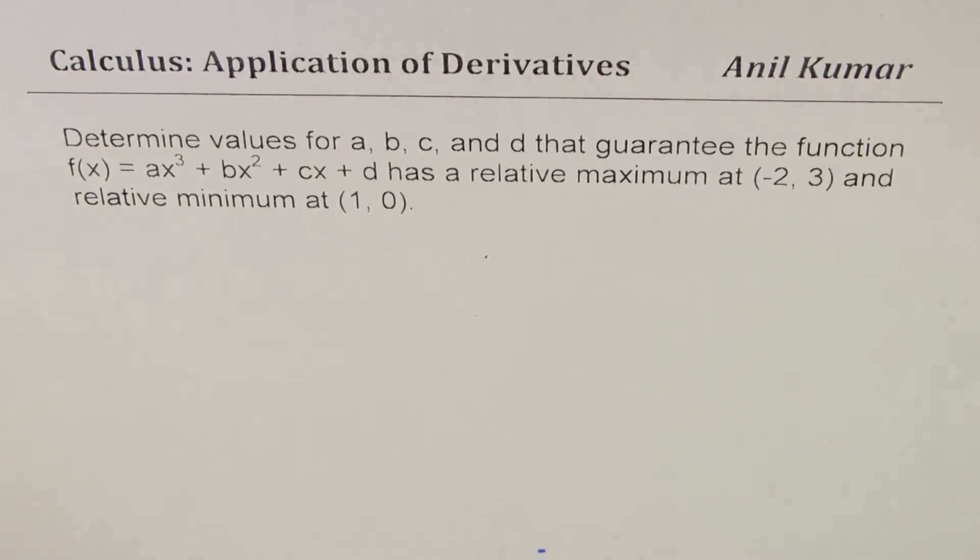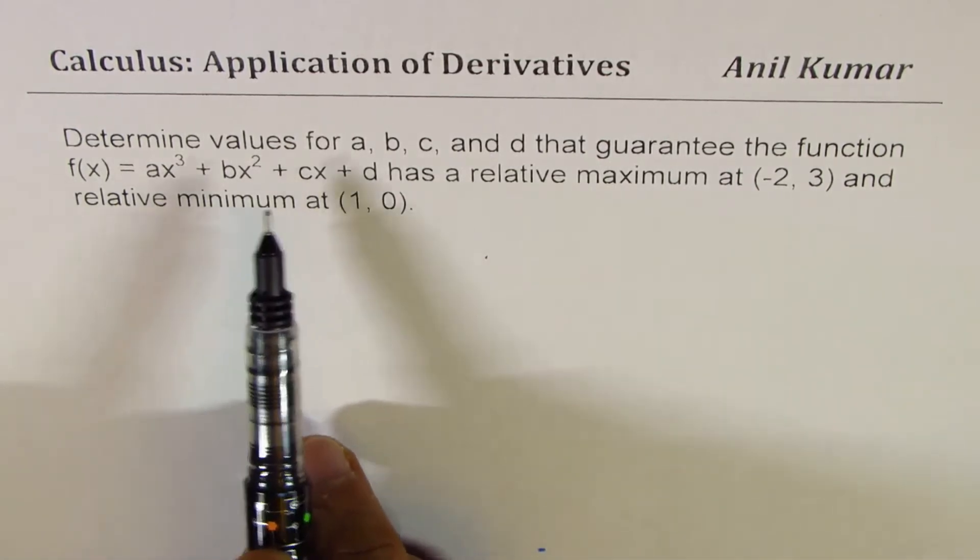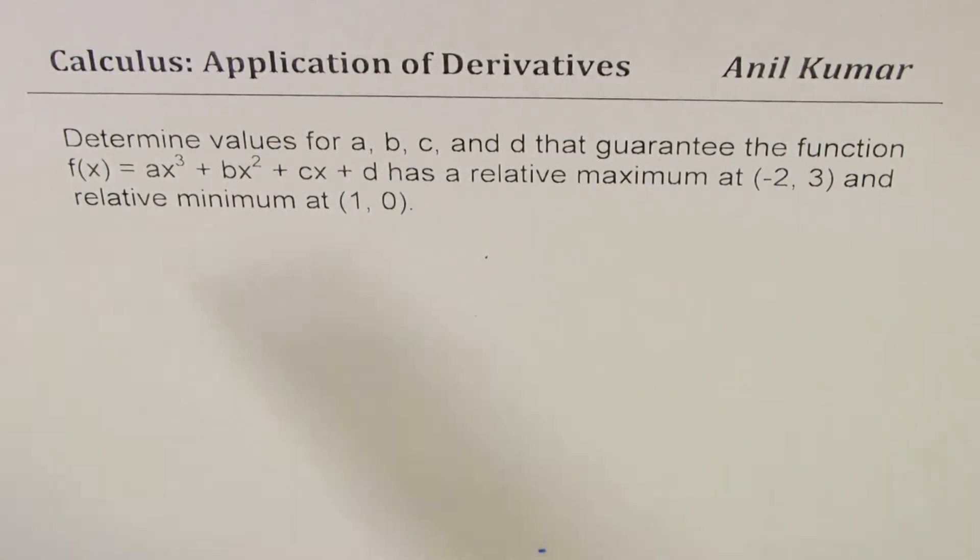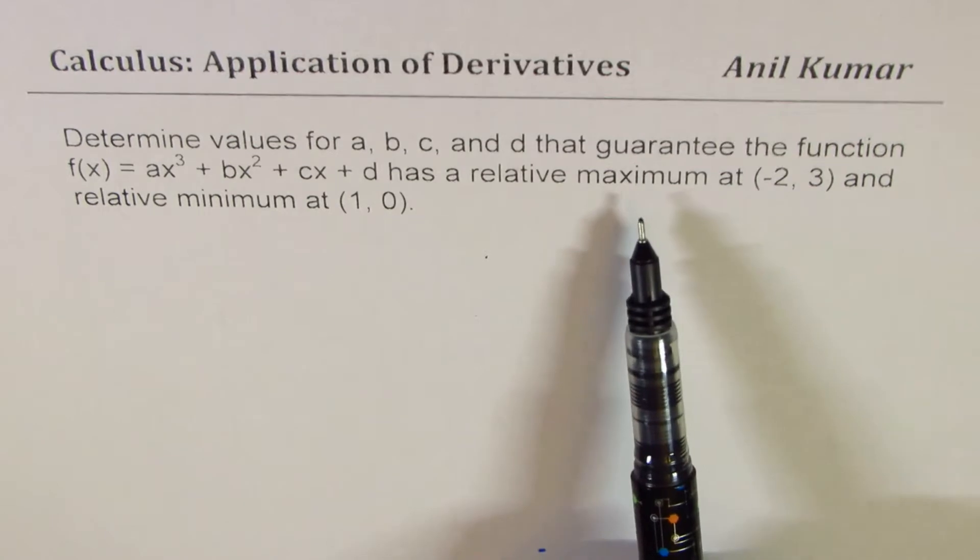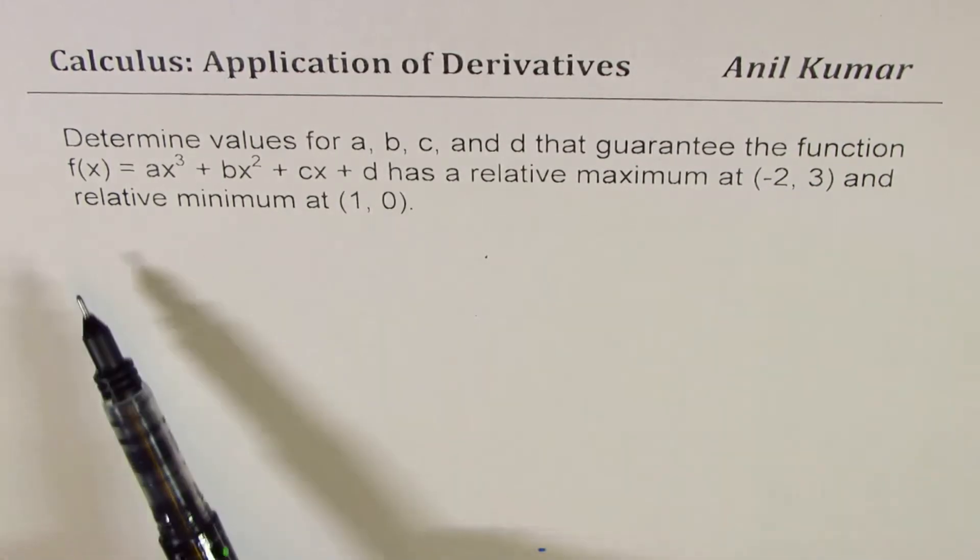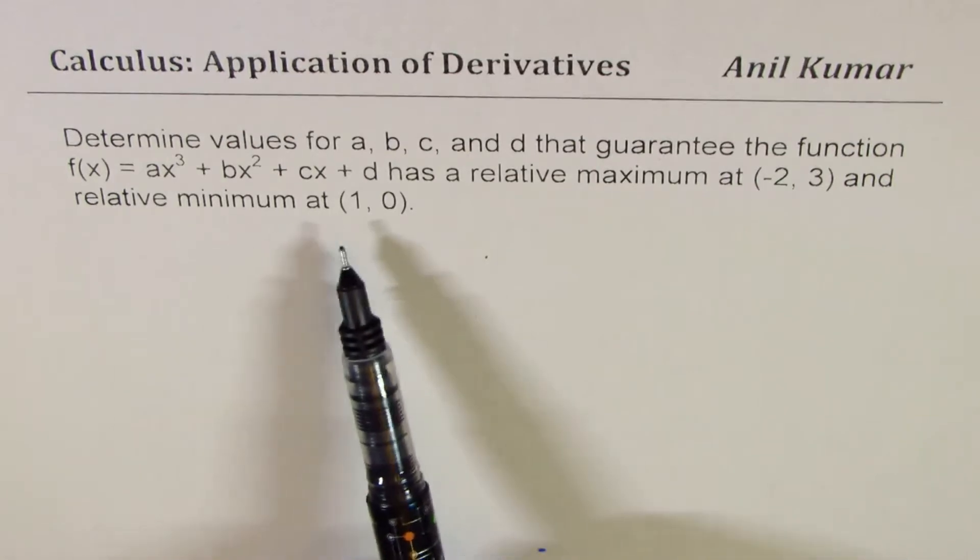We'll review concepts learned in calculus. The question here is: determine values for a, b, c, and d that guarantees the function f(x) = ax³ + bx² + cx + d has a relative maximum at (-2, 3) and relative minimum at (1, 0).